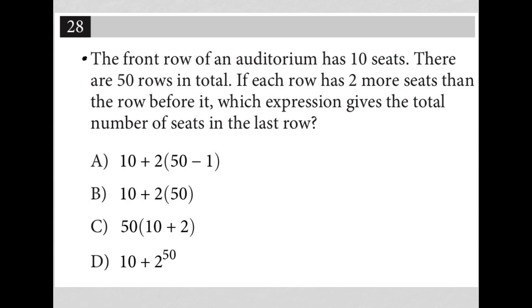All right, so the front row of an auditorium has 10 seats. I'm going to say that this 10 represents row one. And because the question says each row has two more seats than the row before it, I'm going to say this 12 represents row two, three, four, and five.